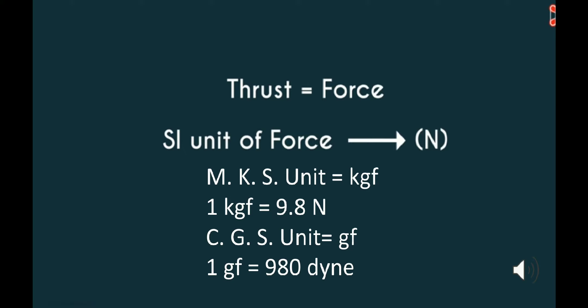Since thrust is equal to force, the SI unit of thrust is the same as that of force — Newton. The MKS unit is kgf, where 1 kgf equals 9.8 Newton. The CGS unit is gf, where 1 gf equals 980 dyne. Remember these conversions for solving numerical problems.